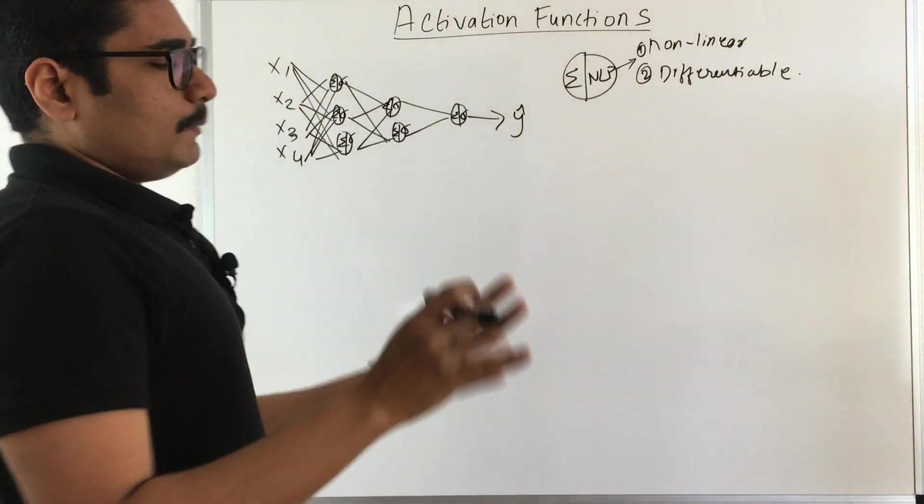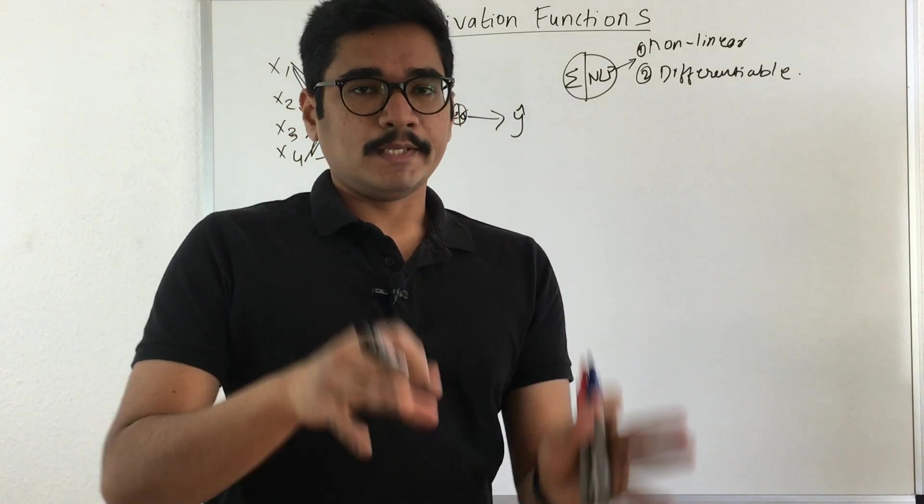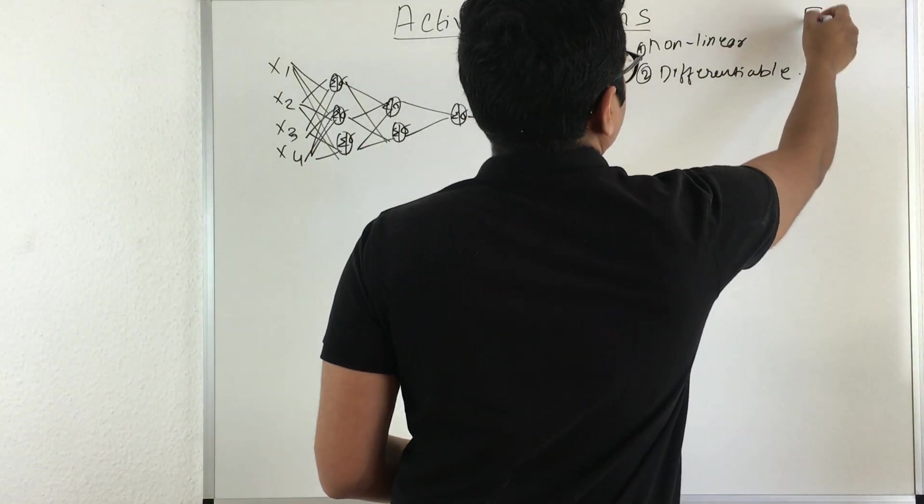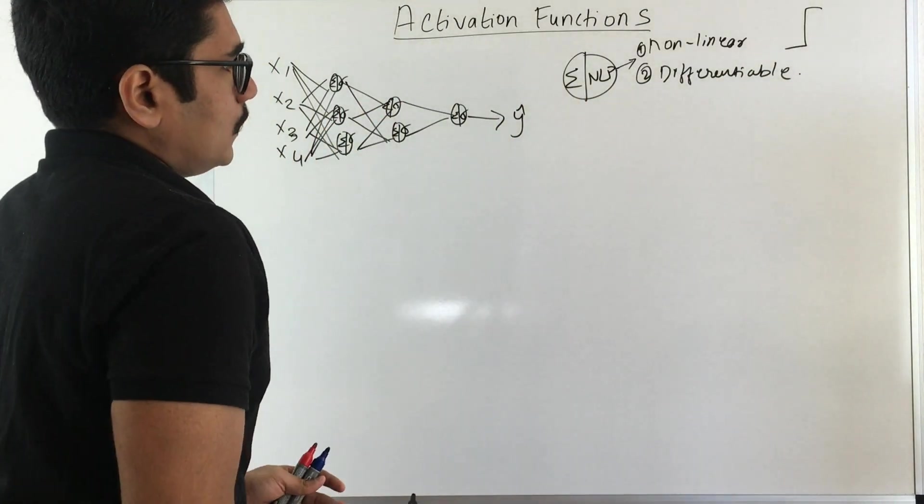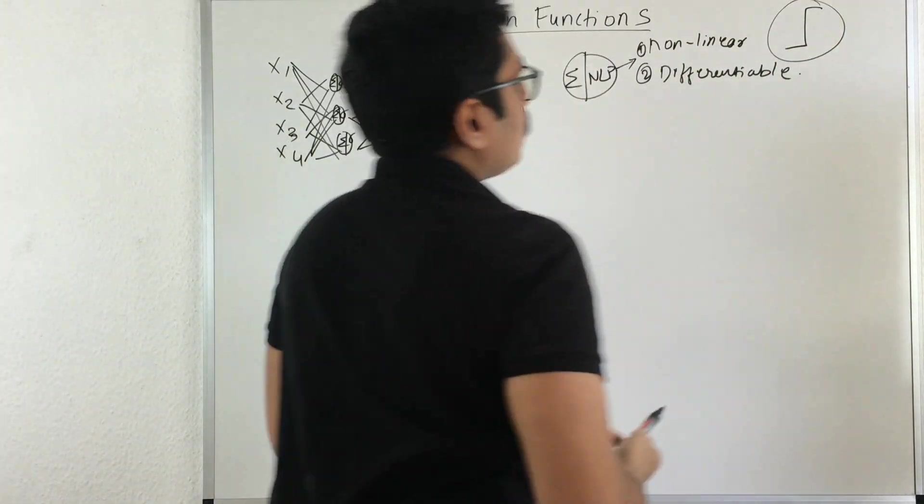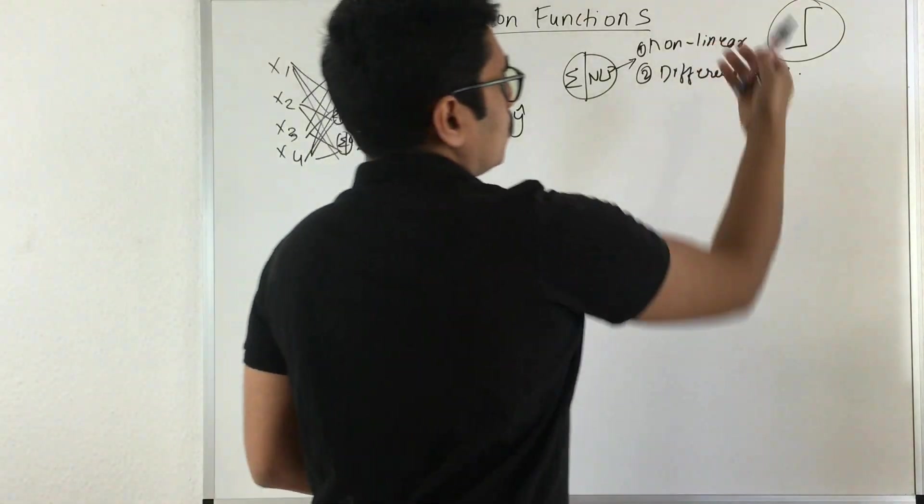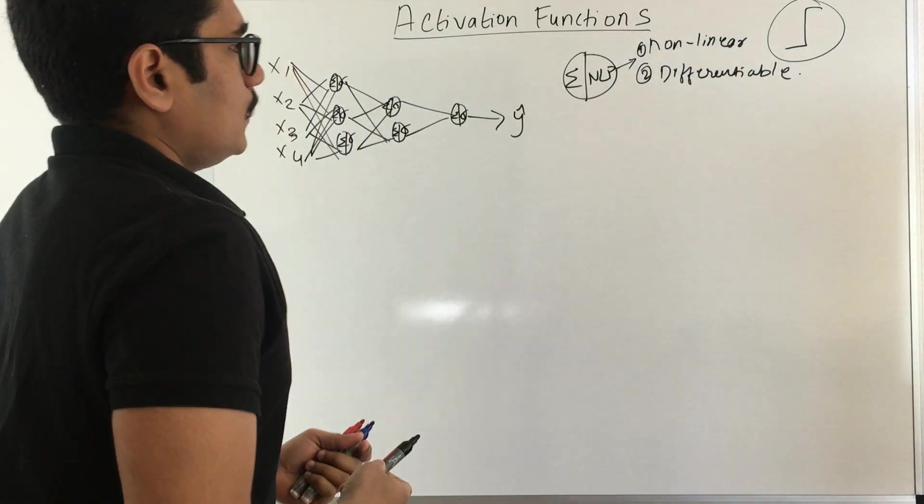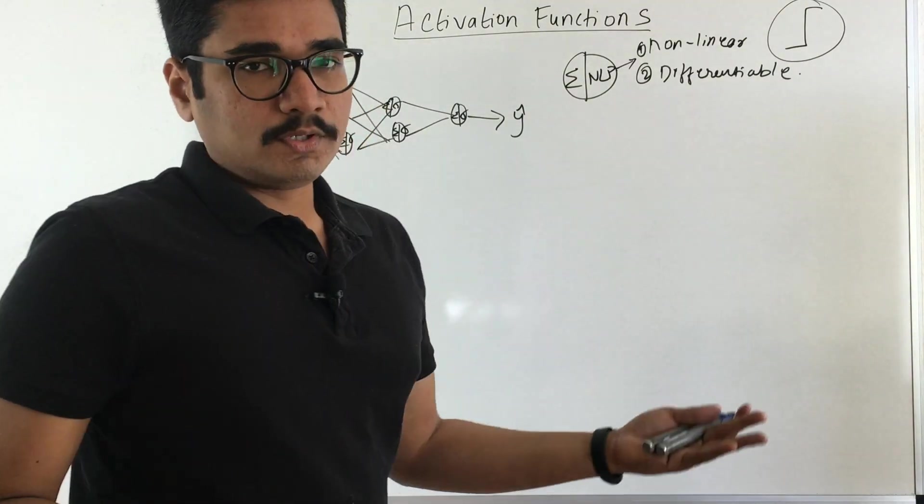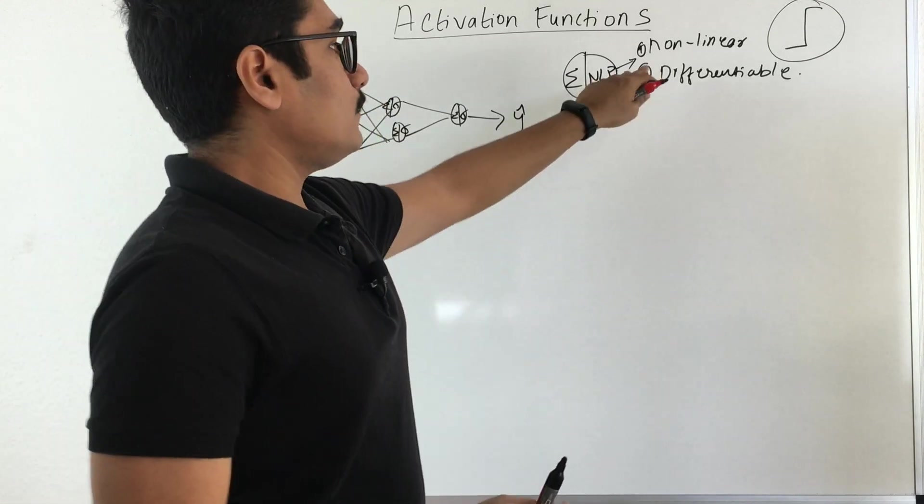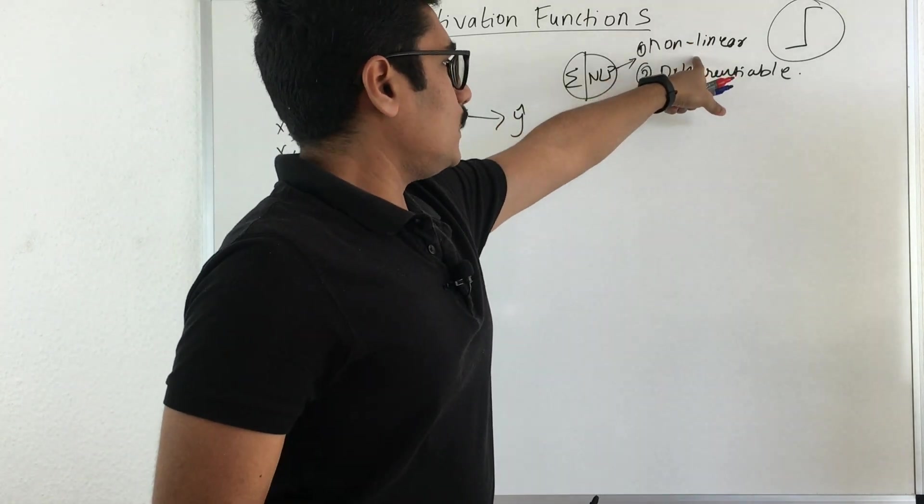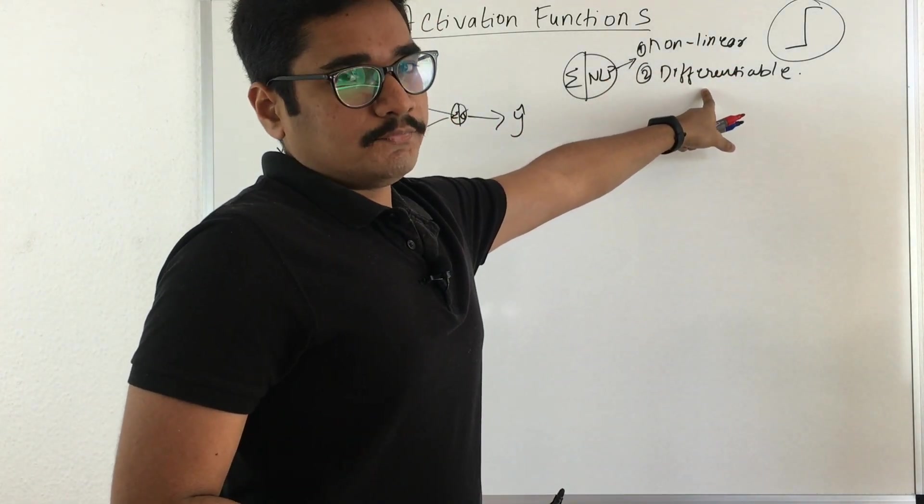Before sigmoid functions we had the MCP, that is McCulloch and Pitts neuron. In that, they used a step function which looks something like this. This step function has one limitation: it is not smooth or differentiable. Whenever you have a neural unit or a neuron, you should have a nonlinear part that satisfies both of these properties: first is nonlinearity, and second is differentiable.